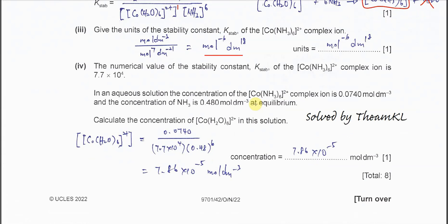Part 4: the K stability value for this complex ion is 7.7 times 10 to the power of 4. In the aqueous solution, the concentration of this complex ion is 0.074 and the concentration of ammonia is 0.48 mole per dm cubed. Calculate the concentration of the hexa aqua cobalt-2 ion.